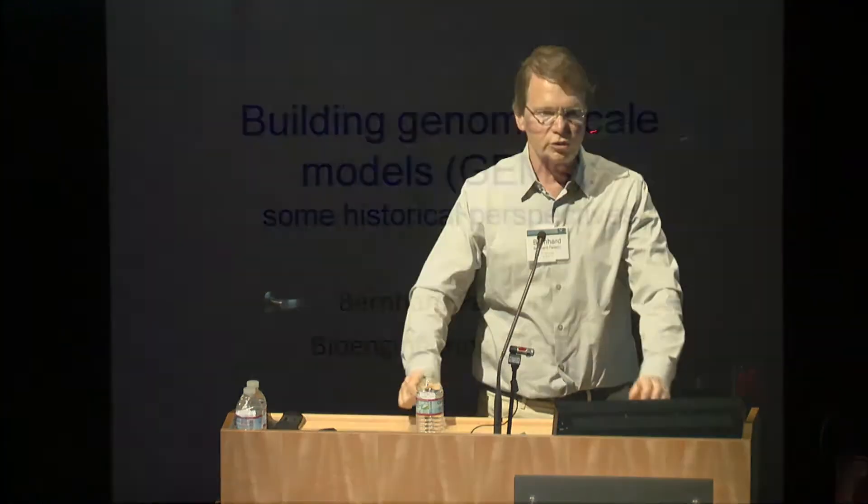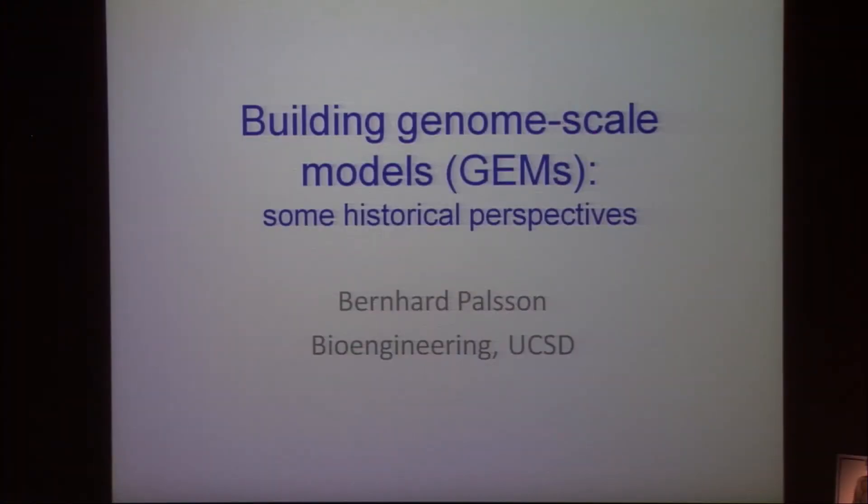My contribution to this meeting is to give a historical perspective on the construction of genome-scale models, which we call GEMs because they are so valuable, both from a scientific standpoint as well as a practical one. It used to be said, and I think this is still true, that if you can't build a predictive model for the red blood cell, forget everything else, because this is literally the simplest cell that you can study, and it's actually quite important.